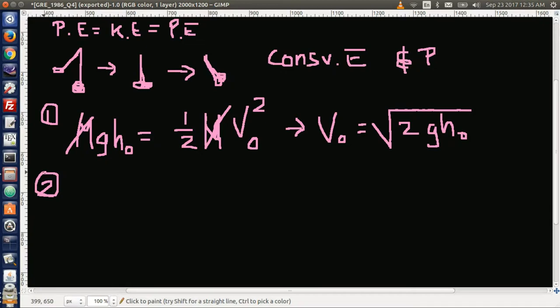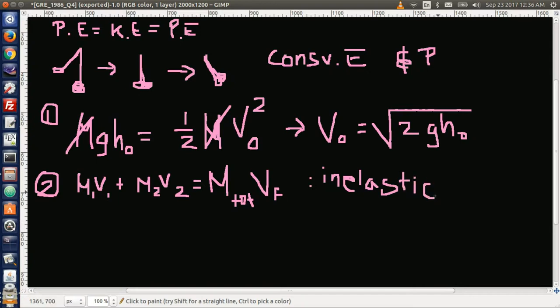Two: conservation of momentum. m₁v₁ plus m₂v₂ equals mass total times the final velocity. This is for inelastic collisions. And here, remember v₂ is actually zero.